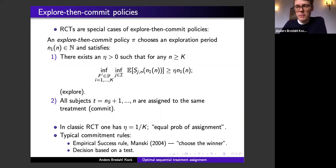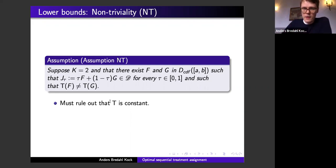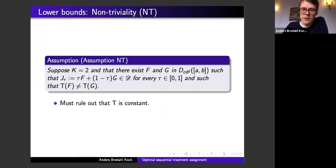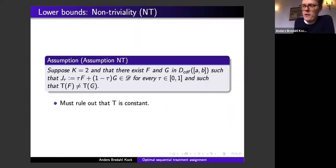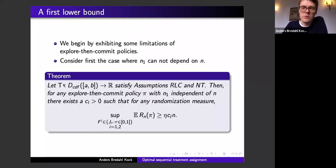We first show fundamental limitations of these two-phase strategies: their worst-case performance is very bad — almost as bad as possible — under a very mild non-triviality assumption. Consider the case of K=2 treatments, where two distributions F and G exist such that the functional takes two different values. This is a non-triviality assumption because if the functional took the same value for all distributions, it wouldn't matter what you assigned.